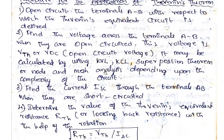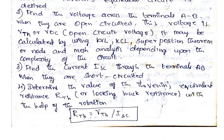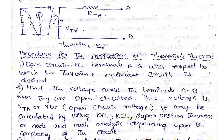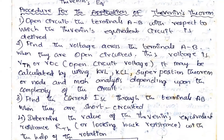Step 3: Find ISC, the short circuit current through the terminal A and B when they are short circuit. We need to find out ISC when it is short circuit; we will see that in detail while solving the problem. Step 4: Determine the value of Thevenin equivalent resistance RTH, or looking-back resistance. All the resistances — say for example, if they are connected in parallel or in series — you need to find out the equivalent resistance. If connected in parallel, find the parallel resistance; if two resistances are in series, combine them. That is called Thevenin's resistance.